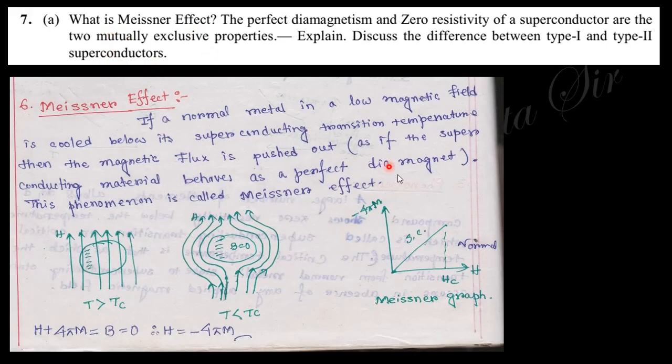Next is: What is Meissner effect? A very interesting effect. If you have a material and the magnetic lines of force pass through it, but if you change its temperature below the critical temperature, the lines of force are repelled. That means it behaves like a diamagnetic material. This effect is actually known as the Meissner effect. When the temperature is above critical temperature, the lines of magnetic field pass through this material. But when this temperature is below the critical temperature, these magnetic lines of force are repelled by this material. This material behaves like a diamagnetic material. This effect is known as Meissner effect.